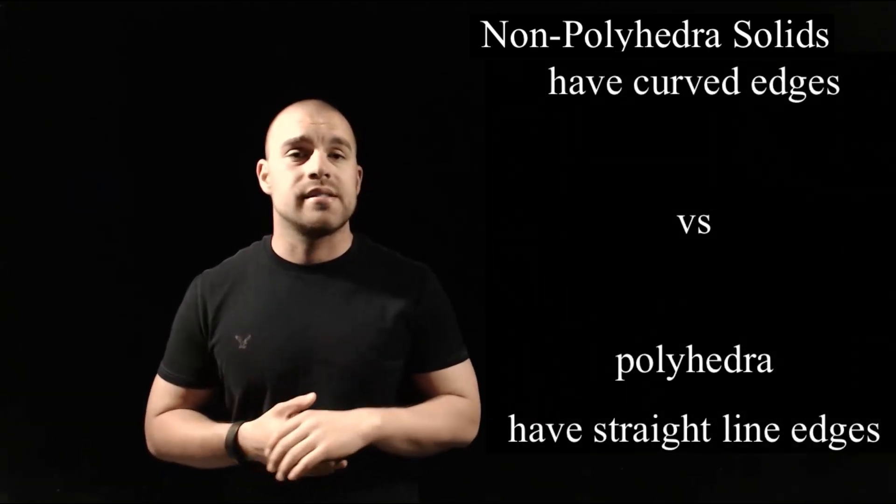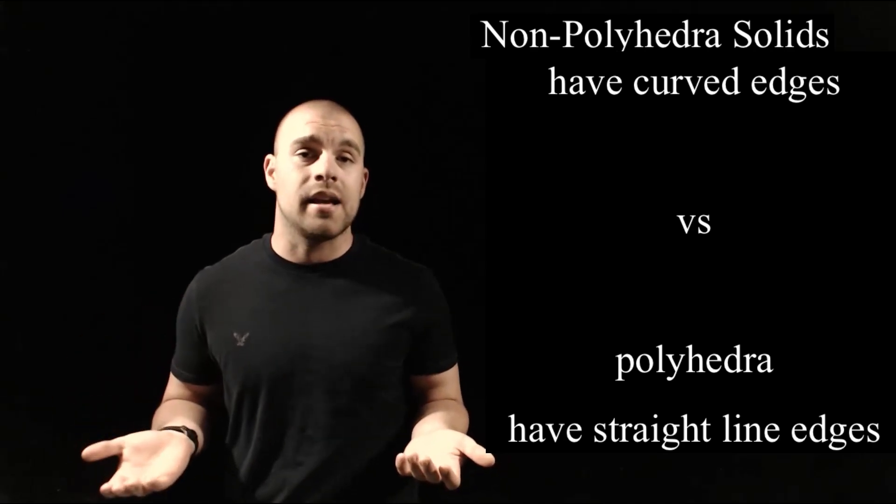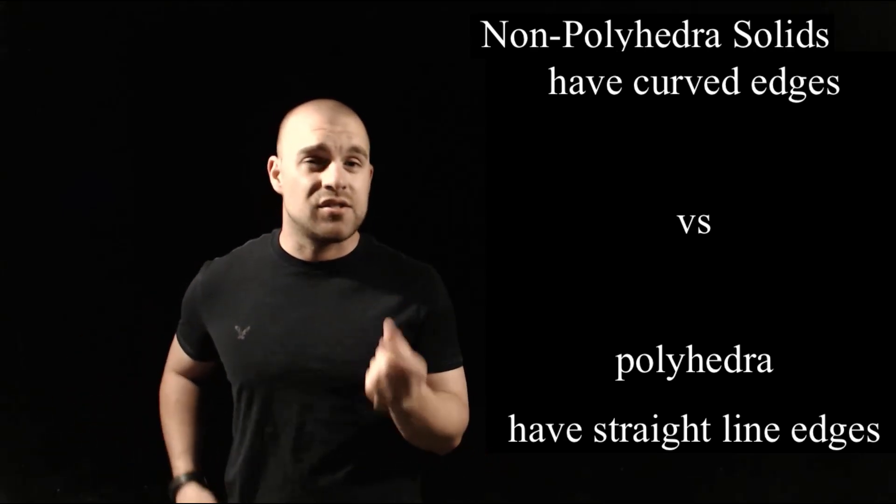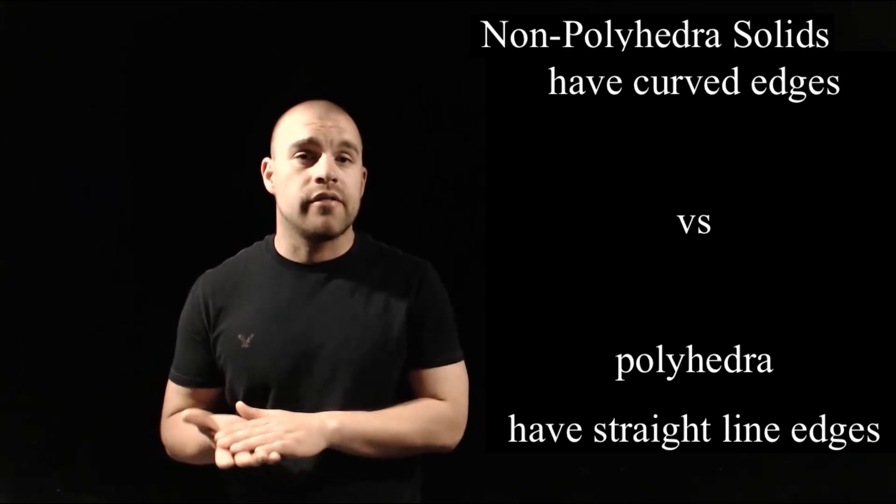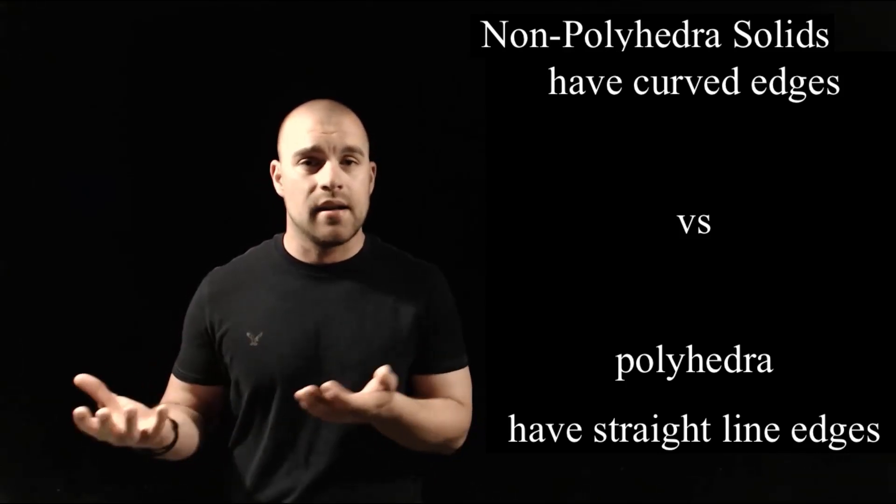So what we should notice is different about these non-polyhedra versus our polyhedra that we talked about are having circles or curved edges. So that's the big distinction between the two, having a curved edge versus having all straight line edges.